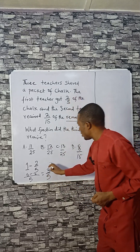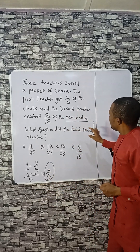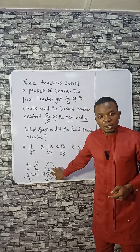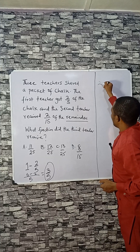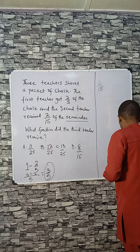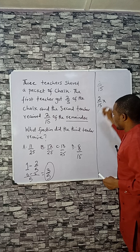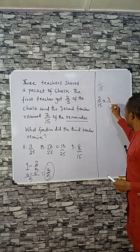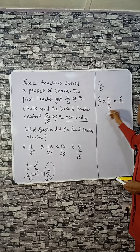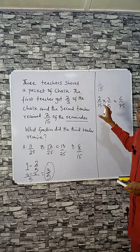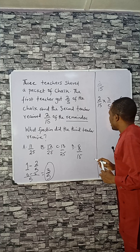The first teacher got 2/5, so the remainder is 3/5 of the total chalk. The second teacher received 2/15 of this remainder, so that means the second teacher got 2/15 of 3/5. Working this out: 2 times 3 is 6, and 15 times 5 is 75, so the second teacher receives 6/75 of the chalk.